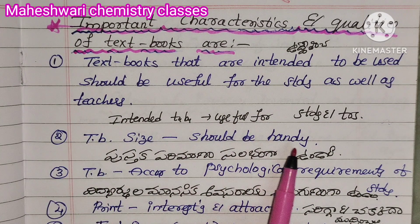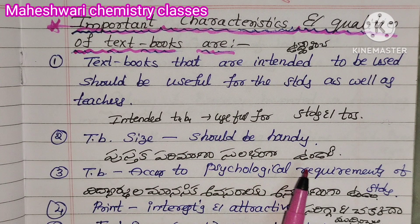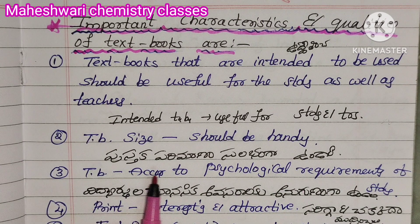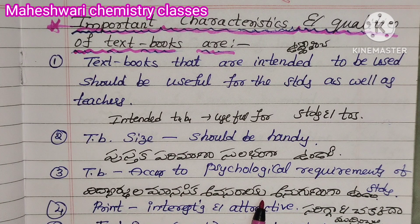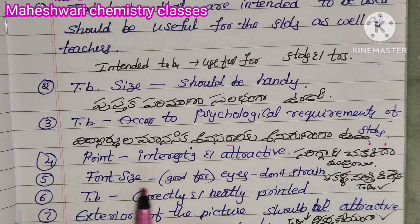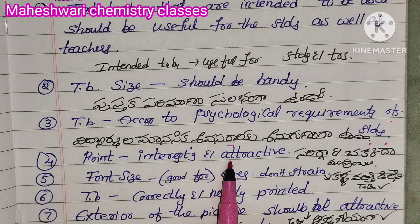Textbook size should be handy. The content should be according to the psychological requirements of students, ensuring it is appropriate and accessible for learners.